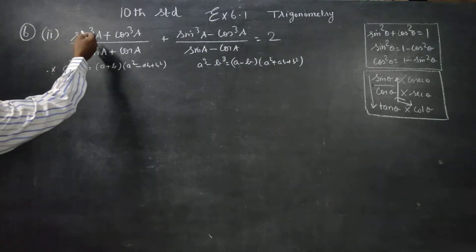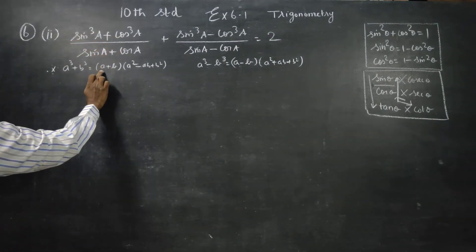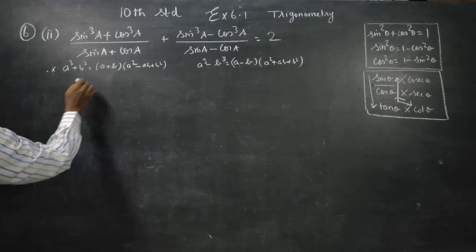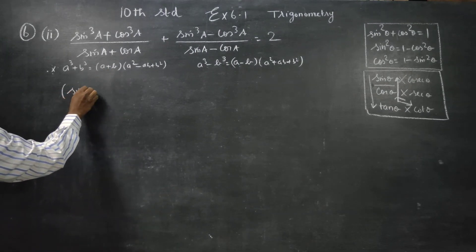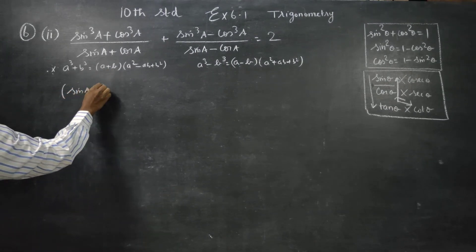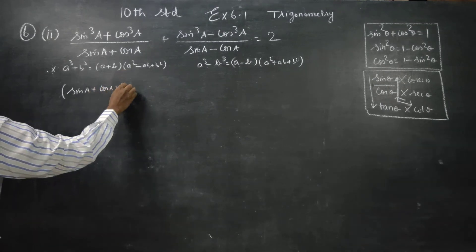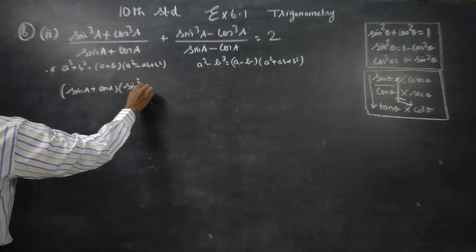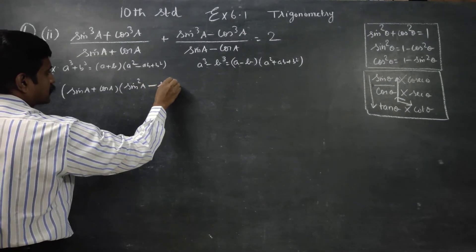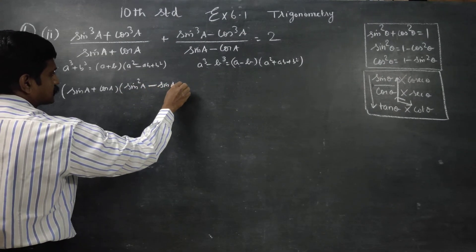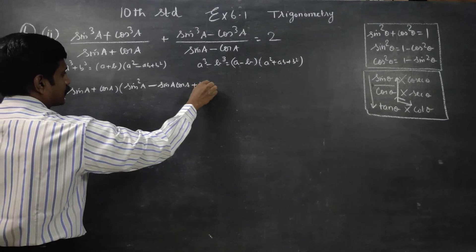Start the sum from the LHS. So sin cube a plus cos cube a would be a plus b cube form. This is a cube plus cos cube, applying a plus b. sin plus cos, as a squared term — a square plus sin square.